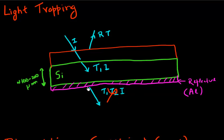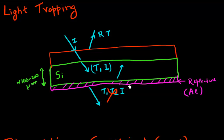So instead of having light escape through the back of my solar cell, what I can do is reflect it back into my silicon. So we got rid of this light escaping through. But now I have another problem: I've tried to maximize the light which comes in, and now I also reflect it back. So now it has twice the thickness of my silicon to travel through.